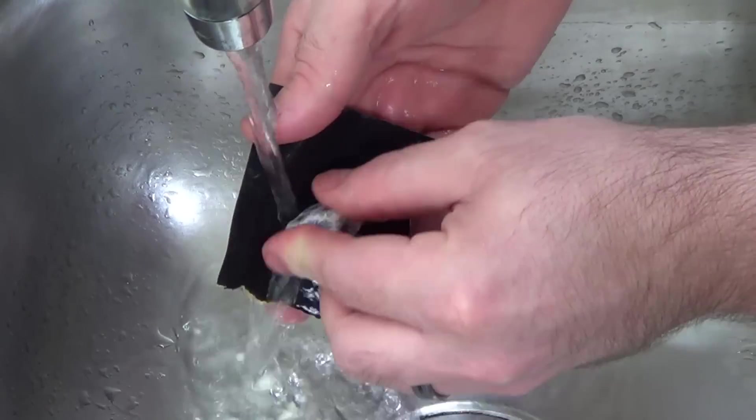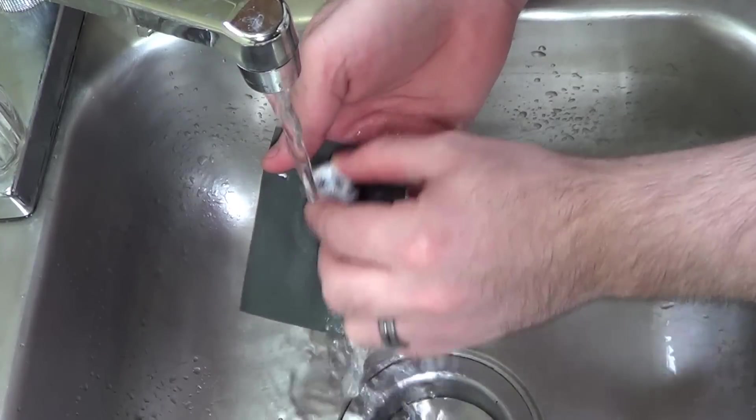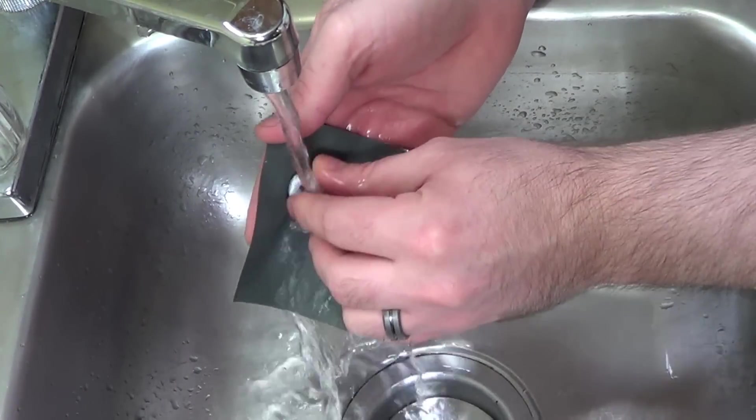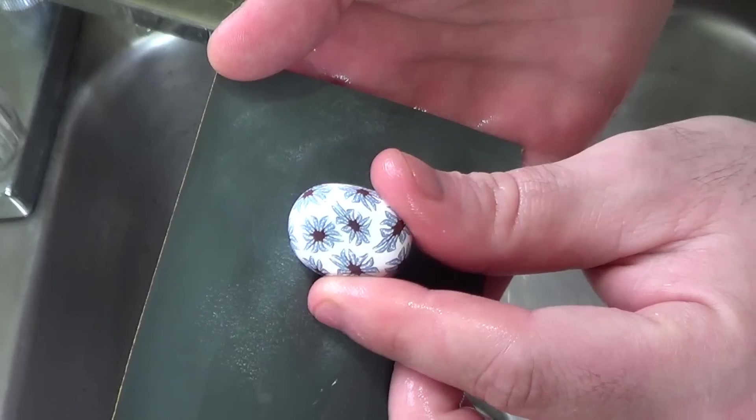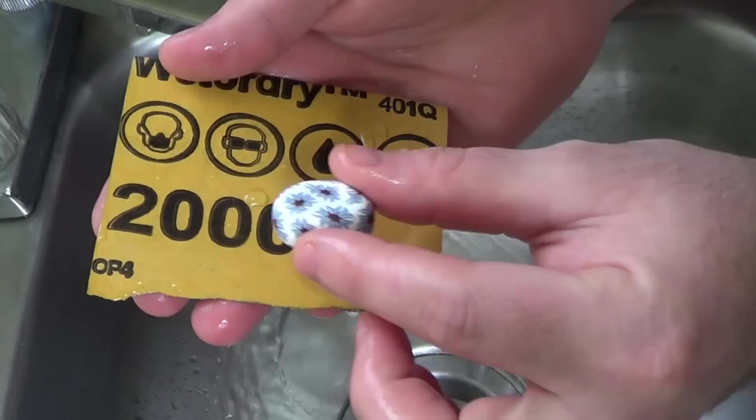I worked through three different grits of sandpaper, starting with 150, then I went to 220, then 400, and then 2000 grit to give it an ultra slick smooth surface.